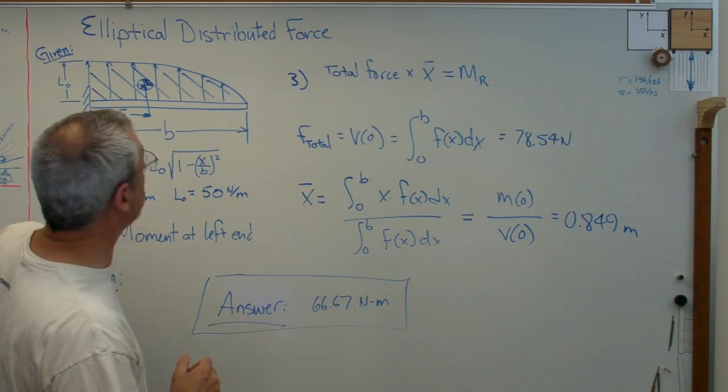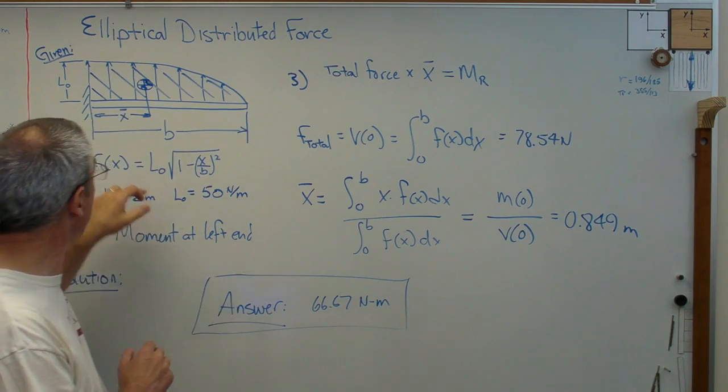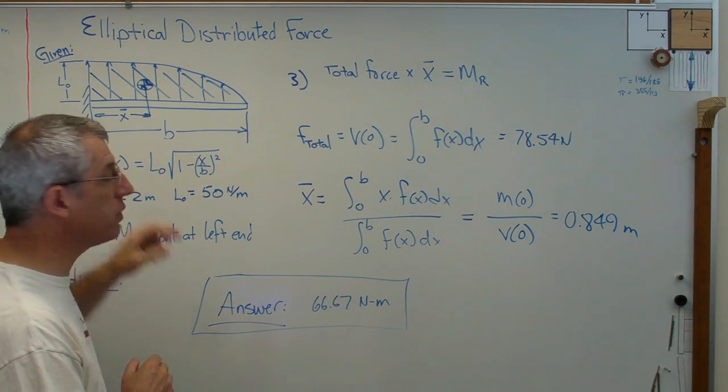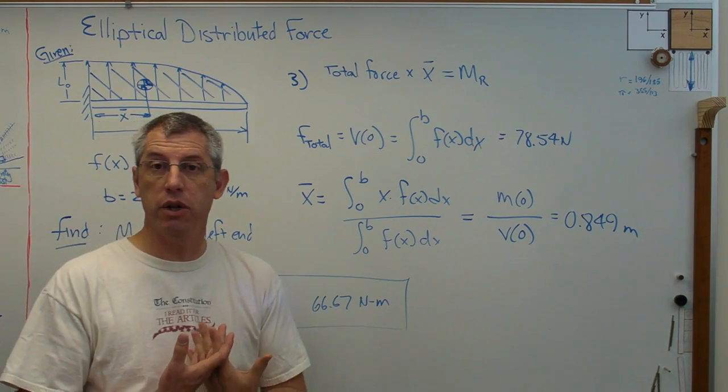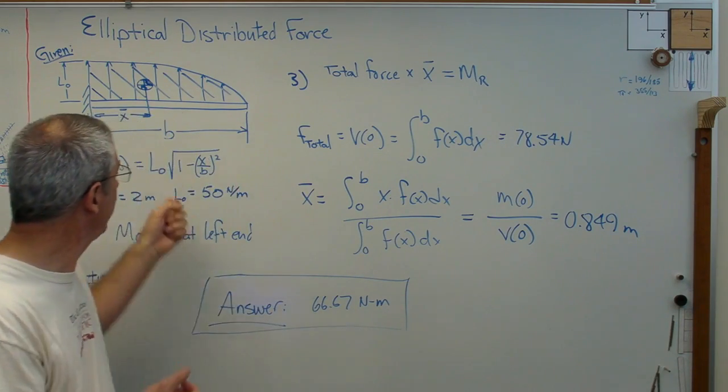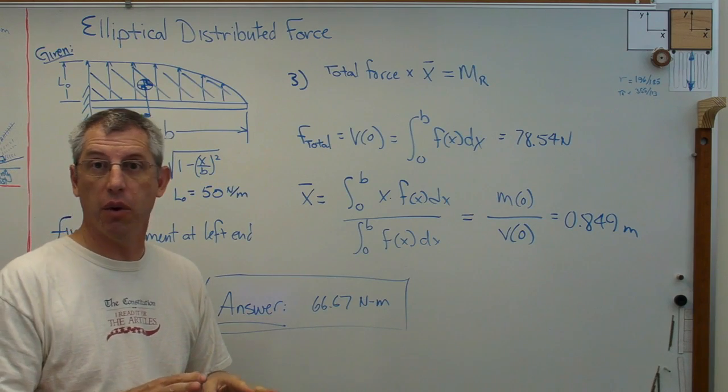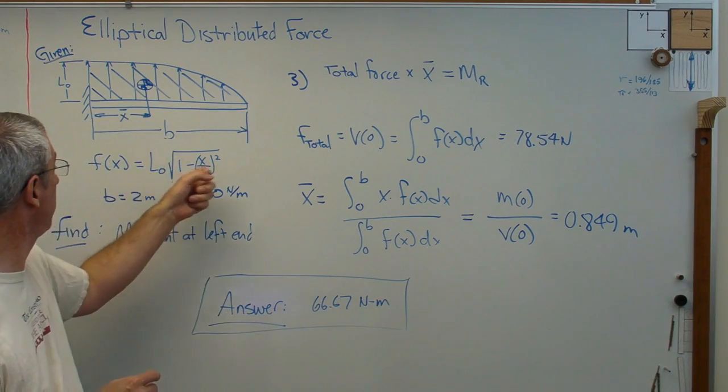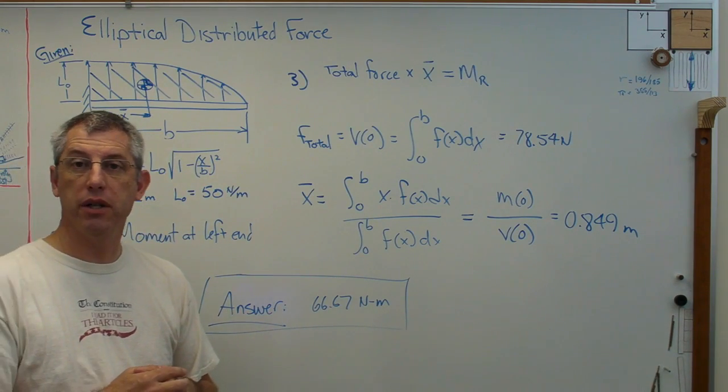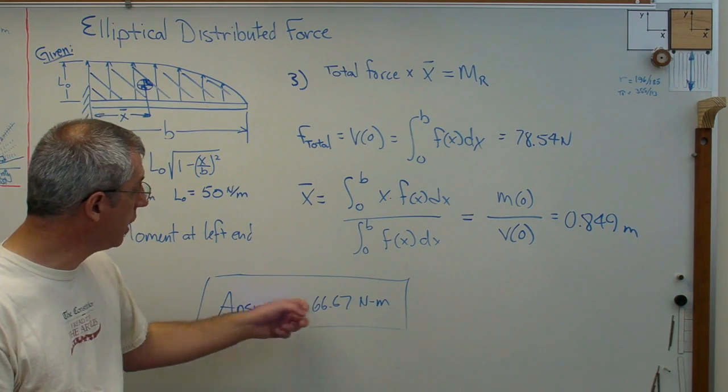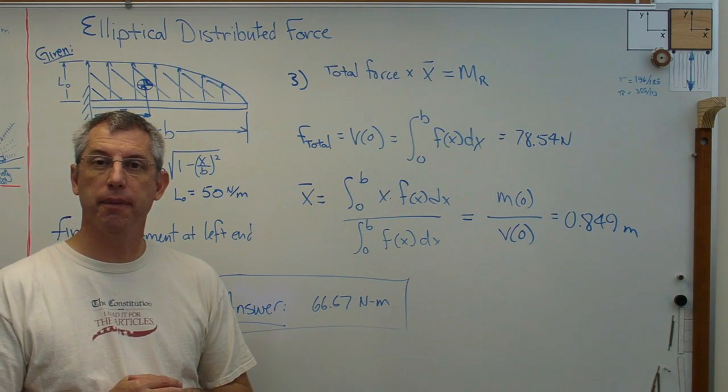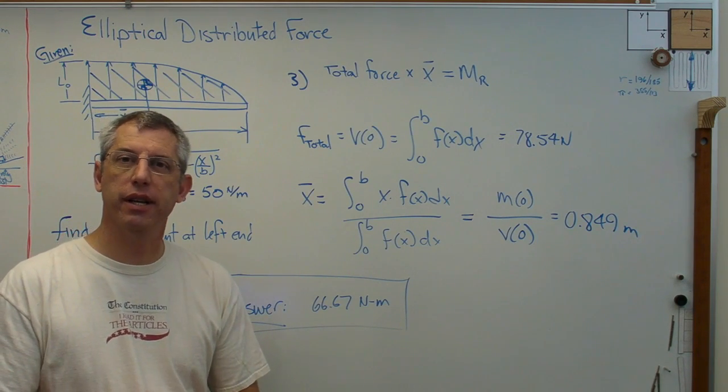So, there you go. Figured out the reaction moment due to a fairly complicated load distribution across the wing. And this could be anything now. Now that we know how to do this generally using integrals, this could be anything. It's not so scary anymore. The process is going to be the same even if we change the formulation of f of x. We've done three different ways, and we've come up with the same answer all three ways. The answer is 66.67. Hope this helps, and I'll see you next time.